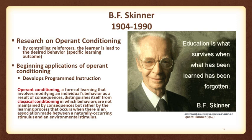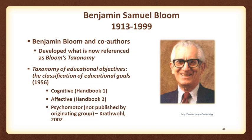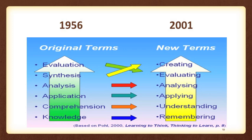Benjamin Bloom and his co-authors, a committee of college and university examiners, published the Taxonomy of Educational Objectives: The Classification of Educational Goals in 1956. This resource was utilized to specify and analyze instructional outcomes. Bloom's taxonomy allows users to rank and structure different classroom activities and to plan the learning process, exemplifying higher-order and lower-order thinking skills. In 2001, Lauren Anderson and others revised Bloom's original work, now referred to as Bloom's Revised Taxonomy, updating the original terms from 1956.